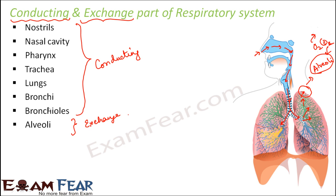Atmosphere here means the environment outside the blood. The conducting parts just allow the air to pass through, and at the same time they try to block foreign particles, germs, or microorganisms with the help of cilia, hair-like structures, or mucus. During exhalation, the blood vessels give carbon dioxide to the alveoli, and then the carbon dioxide passes to the bronchioles, then to the bronchi, then to the trachea, then to the pharynx, and finally through the nostrils it is breathed out. In all of this, those parts only conducted the air — no exchange of gases took place.